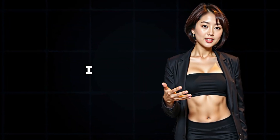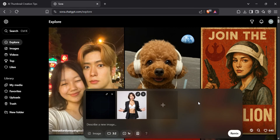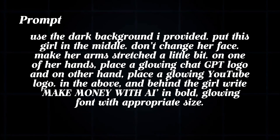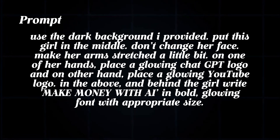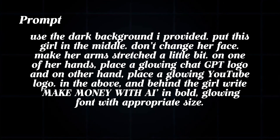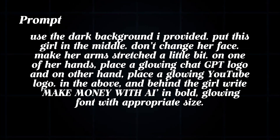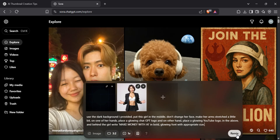For the third thumbnail, I wanted to create something more connected to my channel's theme. First, I uploaded a dark background with some clean white lines — it gives that modern techie look I like. Then I uploaded an image of myself to include in the scene. After that, I used this prompt: use the dark background I provided, put this girl in the middle, don't change her face, make her arms stretched a little bit, on one hand place a glowing ChatGPT logo, and on the other hand place a glowing YouTube logo. In the above and behind the girl, write 'Make money with AI' in bold glowing font with appropriate size. Once you've entered your prompt, go ahead and click the remix button.